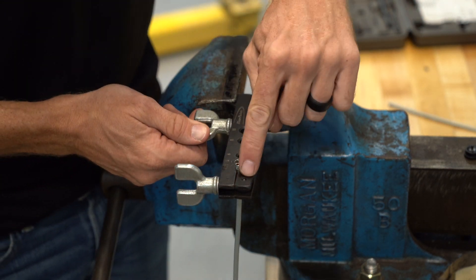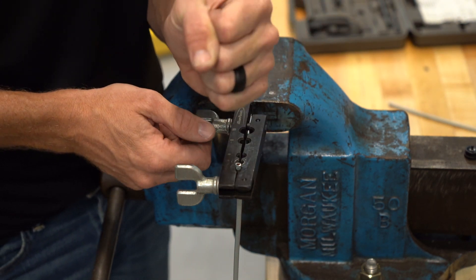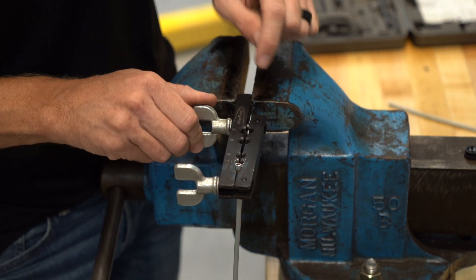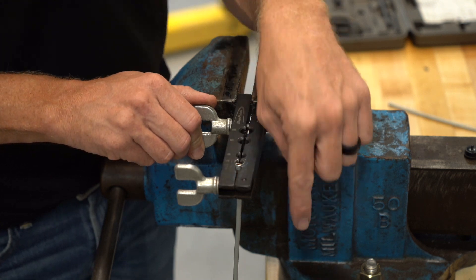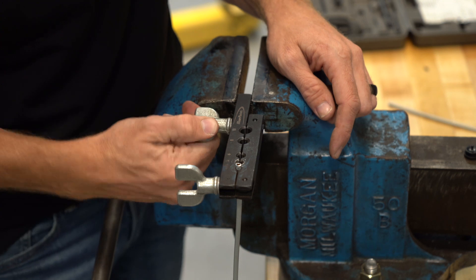Then as I tighten the other one, you can see the tool is actually going to bend and that's really going to put a lot of clamping pressure on this brake line, so the brake line doesn't get shoved down through the tool.